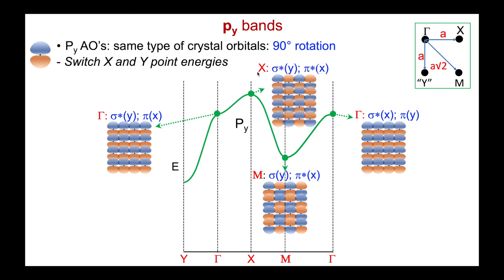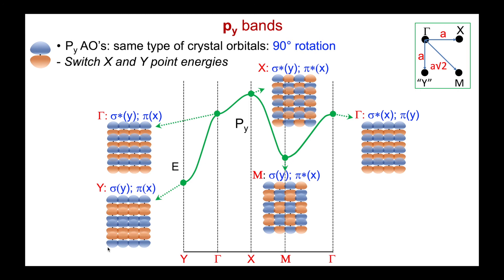What has changed, though, are the x- and y-point energies — they flip. At the x point, kx = π/a gives alternating signs for the py orbitals, producing pi-star interactions along y. ky = 0, so laying them down plus, plus, plus, plus gives sigma-star interactions — high energy. At the y point for the py orbitals, that is going to be the most stable crystal orbital: kx = 0 means no sign changes along x, giving pi in-phase interactions. Because it's the y point, ky = π/a — alternating along y gives sigma bonding interactions. Both in-phase, both bonding — lowest energy.